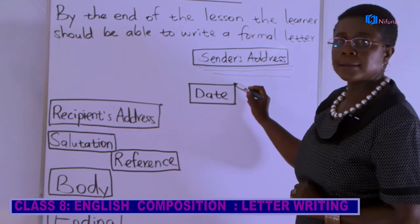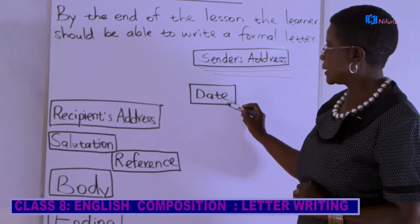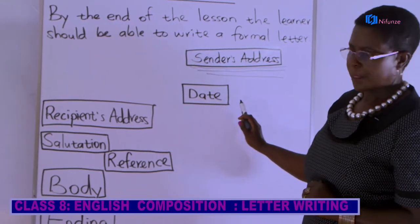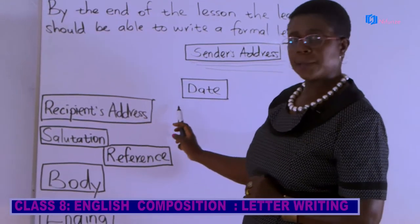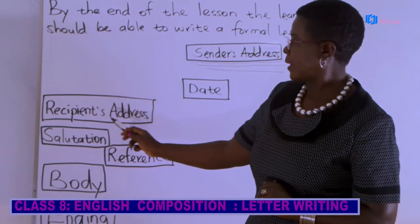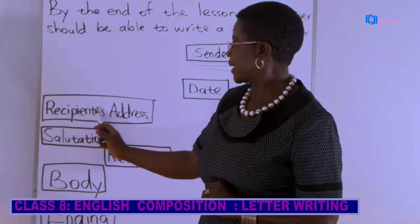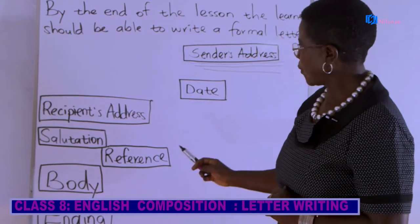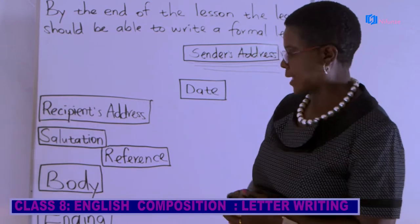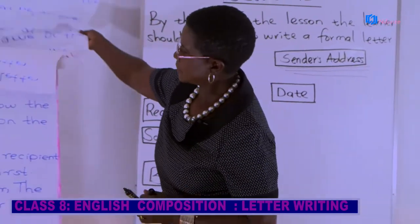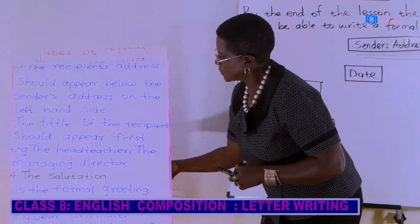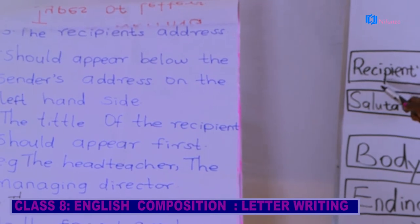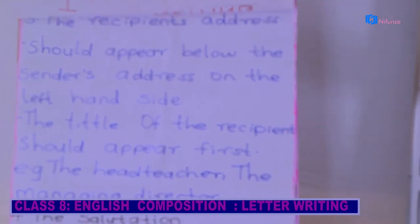After you write the address, you write the date. Before the date, you need to skip a line because the date is not part of the address. After you have written the date, you come down, skip a line, and then you write the recipient's address.